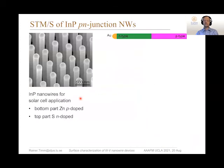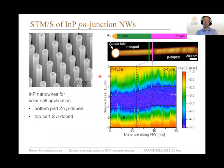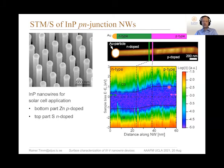Let me switch now to a different type of heterostructure: doping heterostructures, as relevant for solar cells. We have indium phosphide nanowires with the bottom part P-doped and the top part N-doped. If we look at such a nanowire in the STM and take STS spectra all along the transition from N to P-doped and plot them spectrum by spectrum, we can see the band gap, the band alignment, and the transition from the N-doped area to the P-doped area. We see the depletion region at the surface extends over only about 15 nanometers.